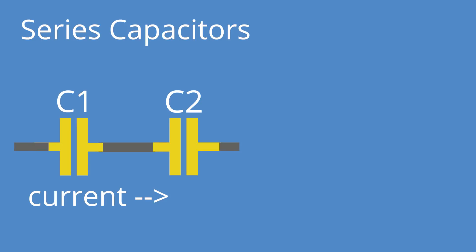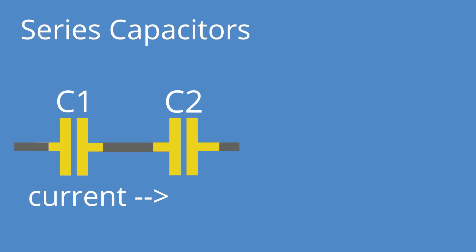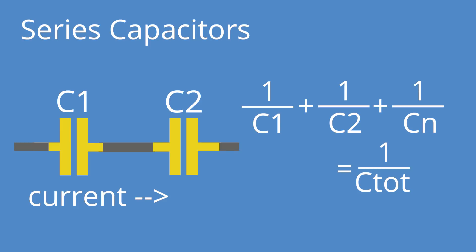Just like with resistors, capacitors can be used together in a circuit to either increase or decrease the total capacitance. However, the relationship between capacitors is flipped from resistors. If you have capacitors in series, since the current through all the capacitors is the same, the charge stored in each capacitor will also be the same — because all of the charge is coming from its adjacent capacitor. To calculate total equivalent capacitance, the math is the same as resistors in parallel: 1/C1 + 1/C2 + 1/C3 + 1/C4, etc., all equals 1/C total.